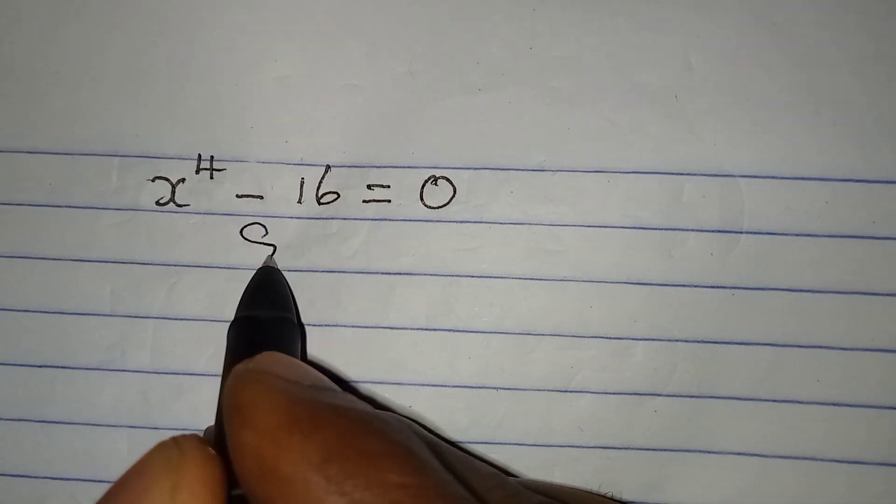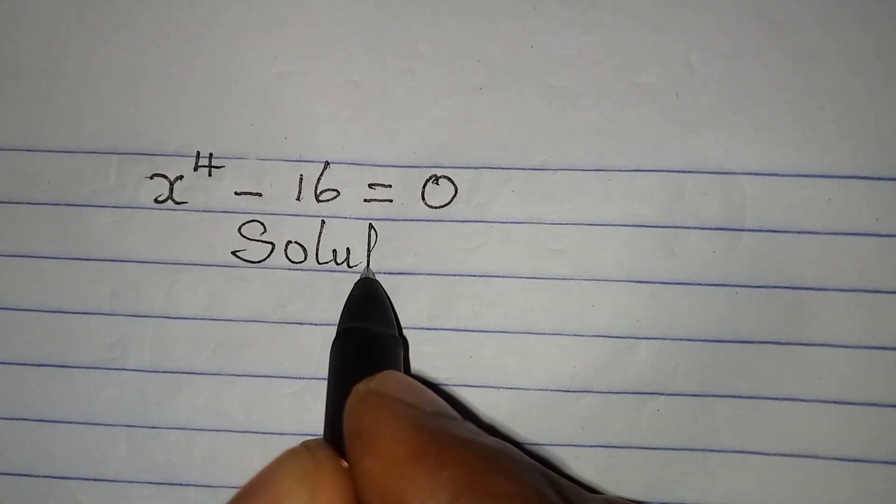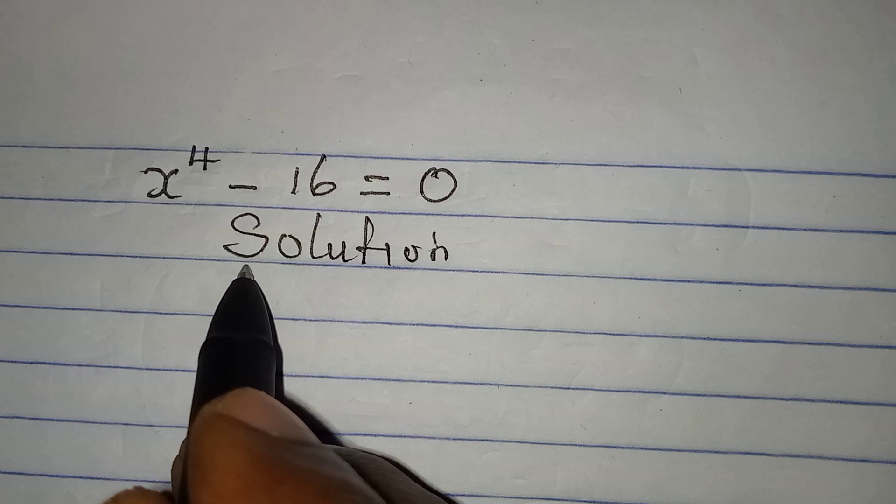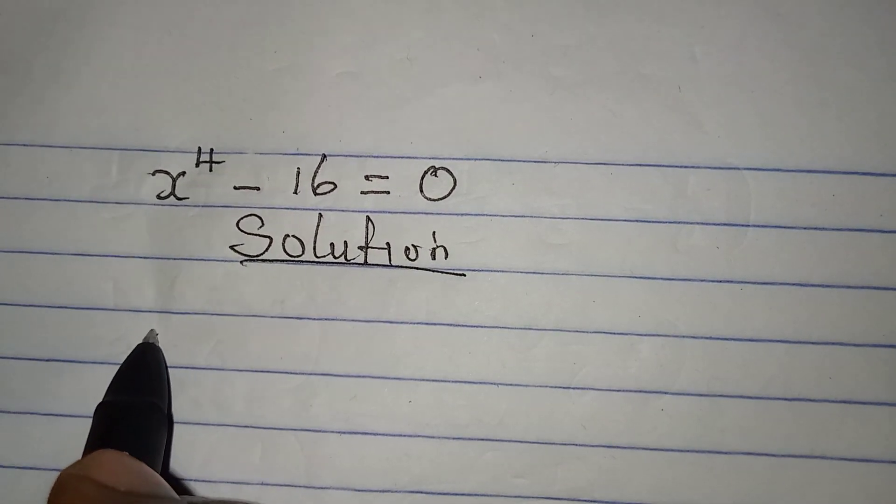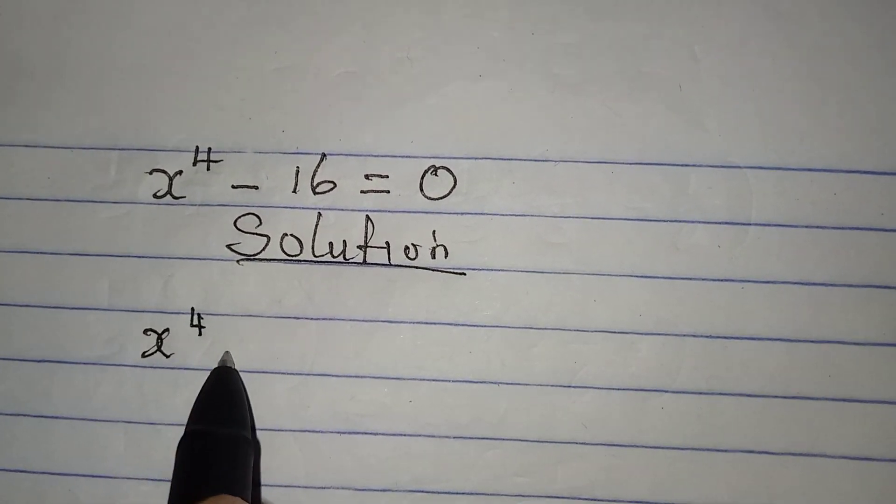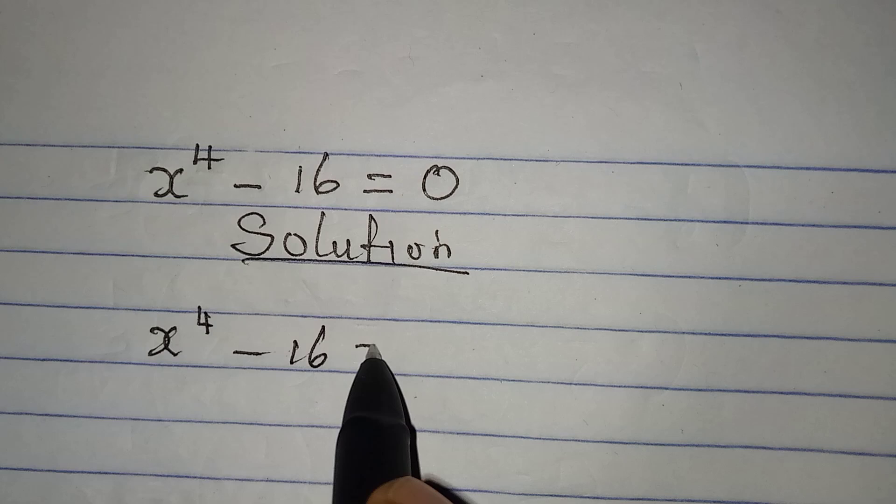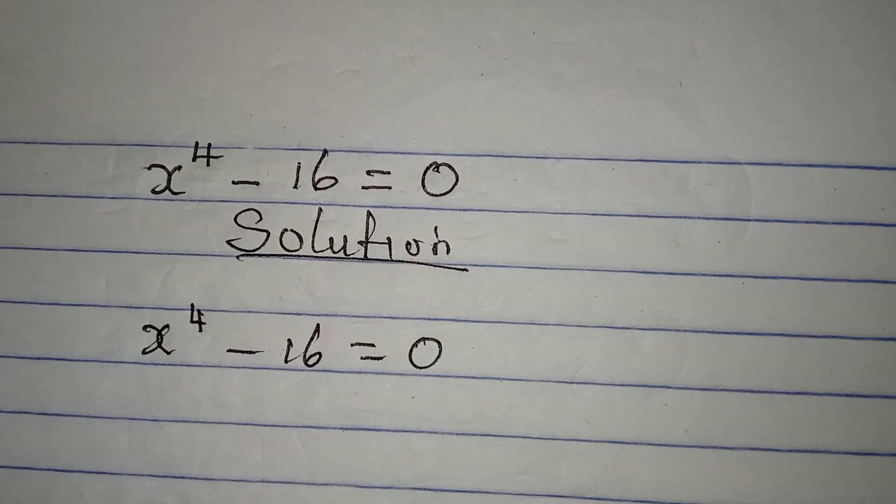Hello everyone. Let's solve this problem very quickly. We have x to the power of 4 minus 16 to be equal to 0.